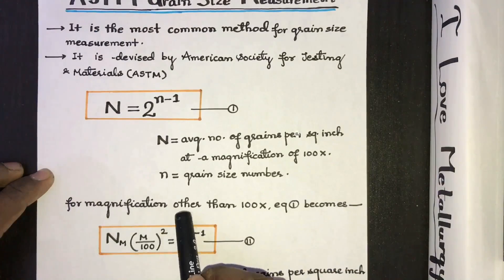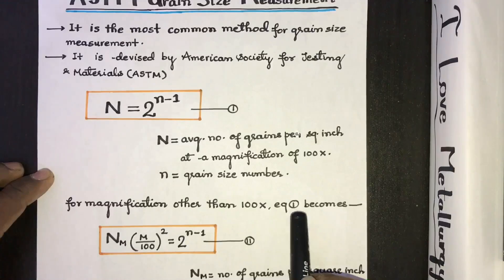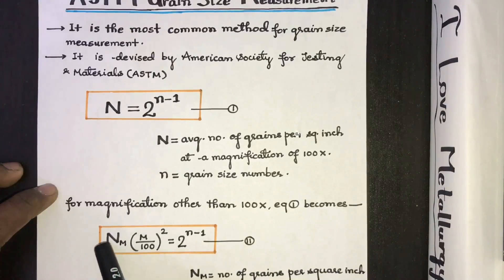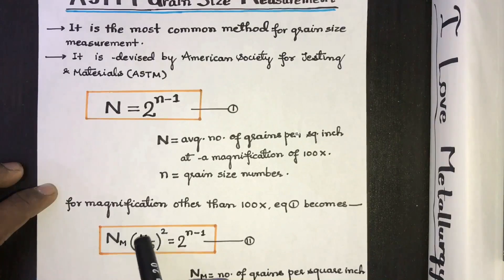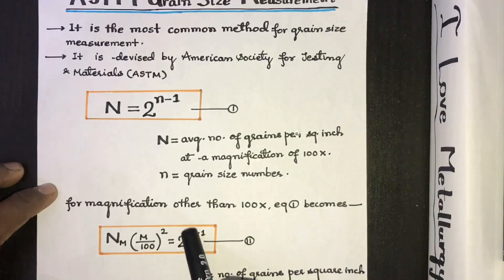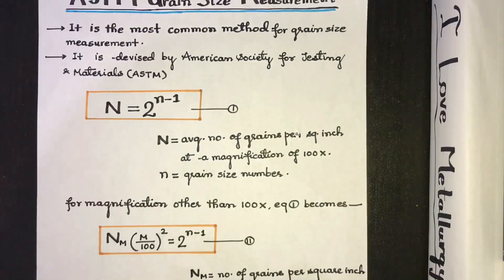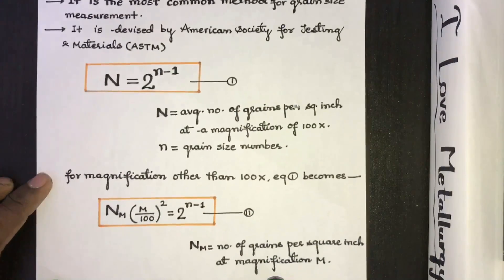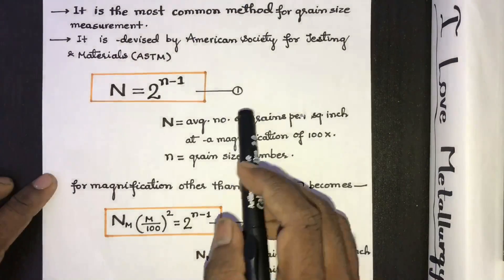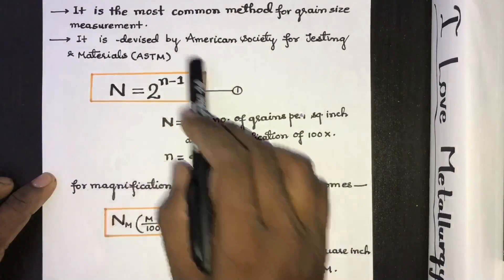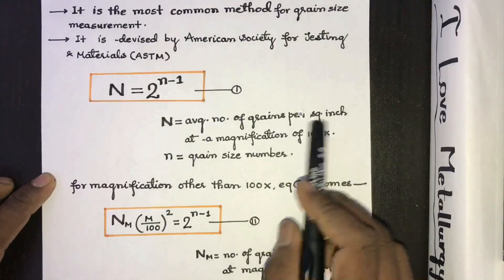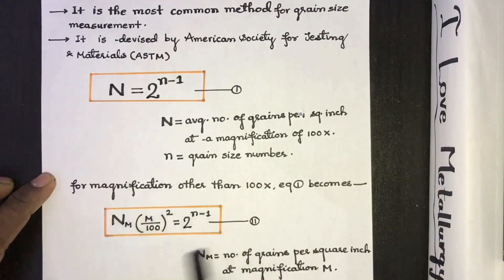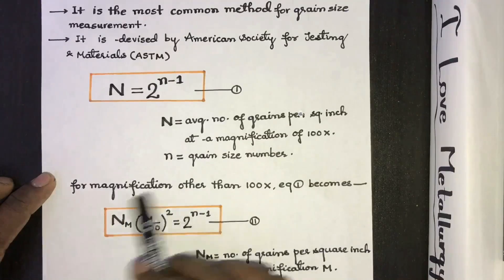For magnifications other than 100, equation 1 changes: the average number of grains per square inch at magnification M, multiplied by (M divided by 100) squared, equals 2 to the power of n minus 1, where N_M is the number of grains per square inch at magnification M. So the first formula is used at magnification 100, and the second formula can be used for any magnification.